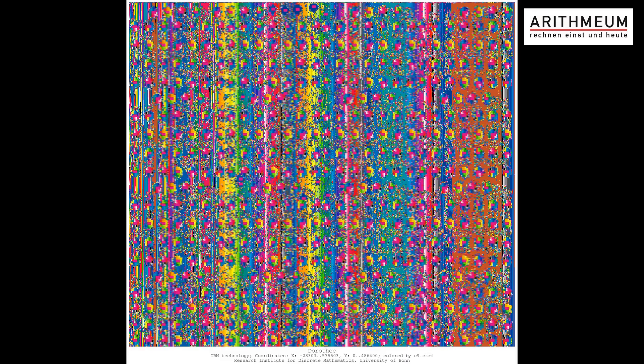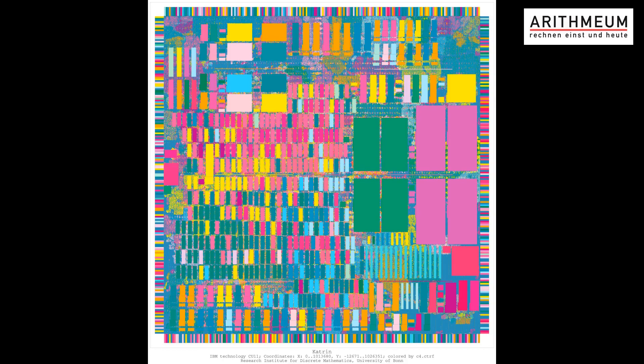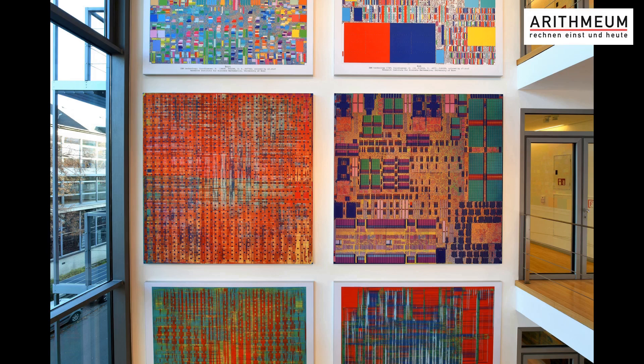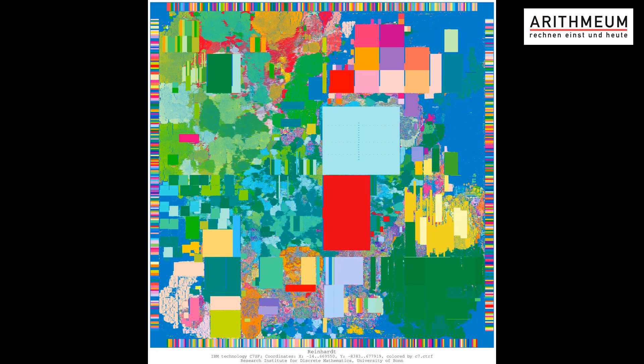Some chips look rather playful; some look more regular and straight. Sometimes the photographs depict the structures of the design in their actual colors — without any additional image processing at all. Some structures show especially well how efficiently BonnTools work. BonnTools are the algorithms of chip design from the Research Institute for Discrete Mathematics.